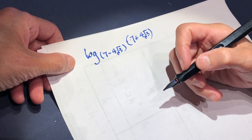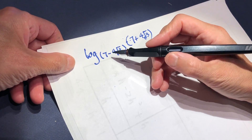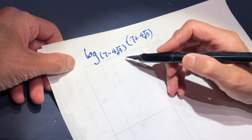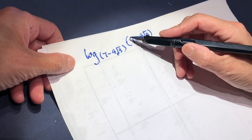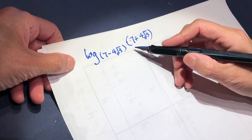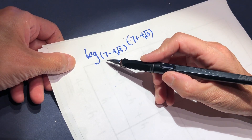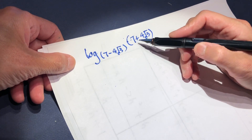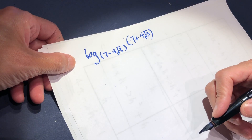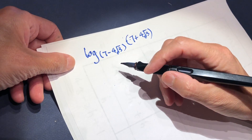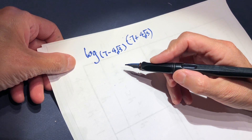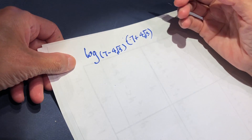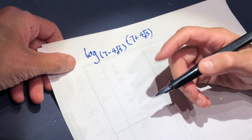So first let me try to read it. Log of base seven minus four root three, of seven plus four root three. It's very difficult to read. You can use a scientific calculator and figure out this number using the log method. This is one way.